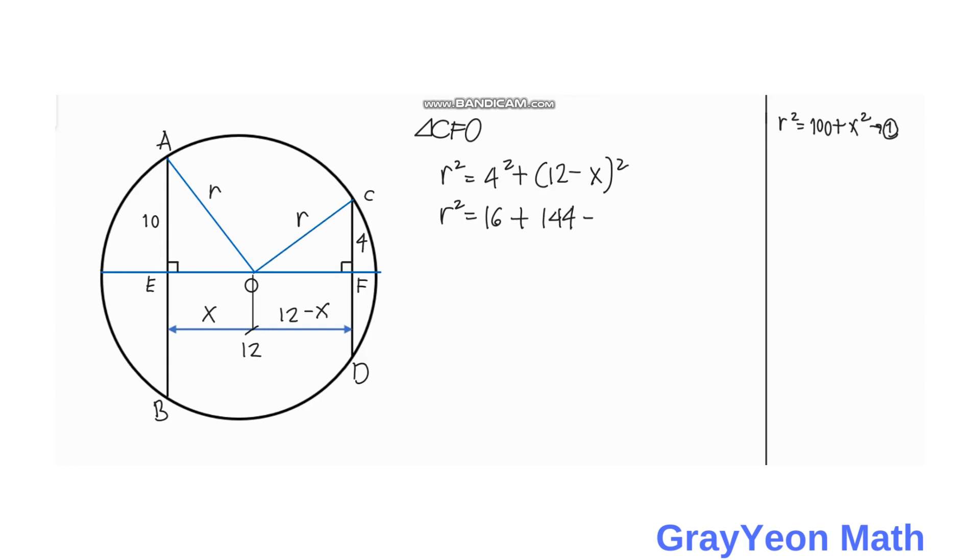Plus X squared, and simplifying this we have R squared is equal to X squared minus 24X plus 160 and this would be our equation number 2.